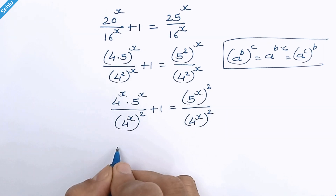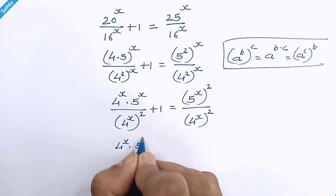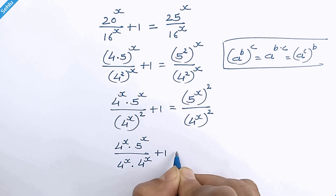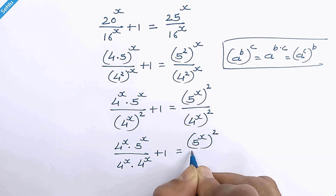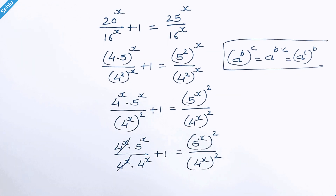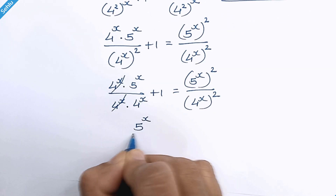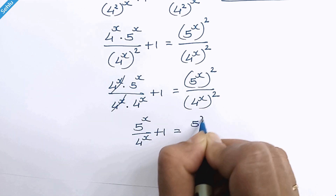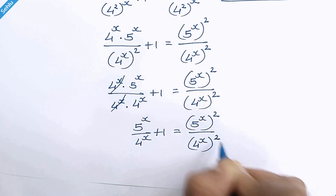Here we can write 4 raised to x times 4 raised to x, plus 1. These two cancel out, leaving: 5 raised to x over 4 raised to x, plus 1, is equal to 5 raised to x whole squared over 4 raised to x whole squared.